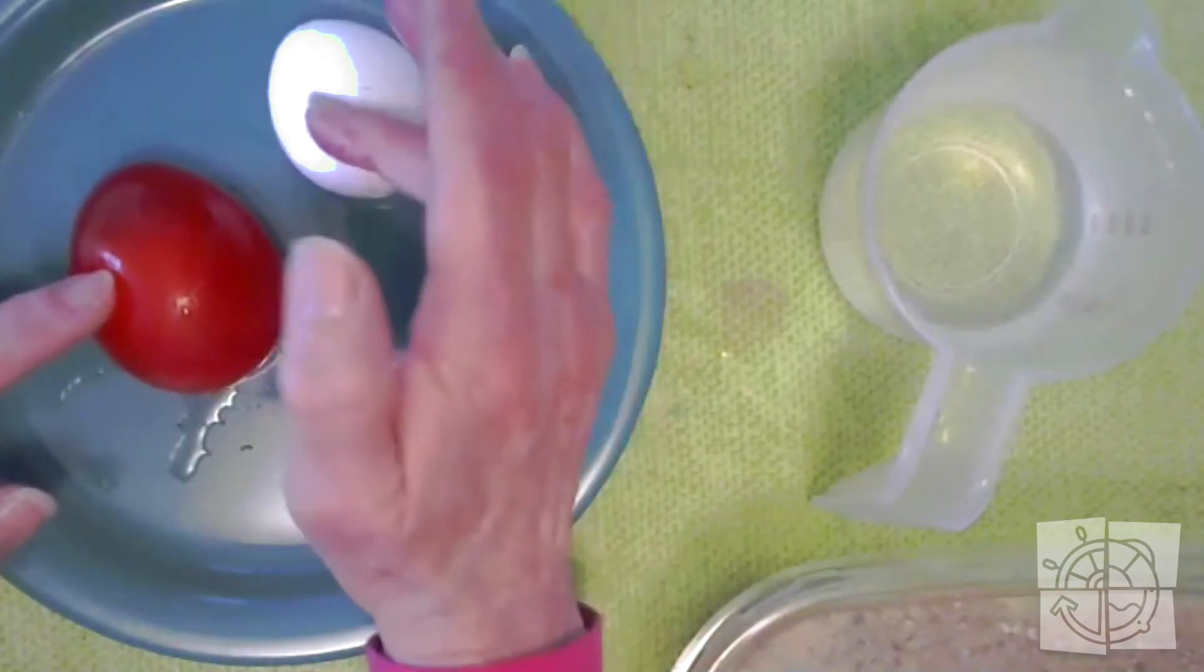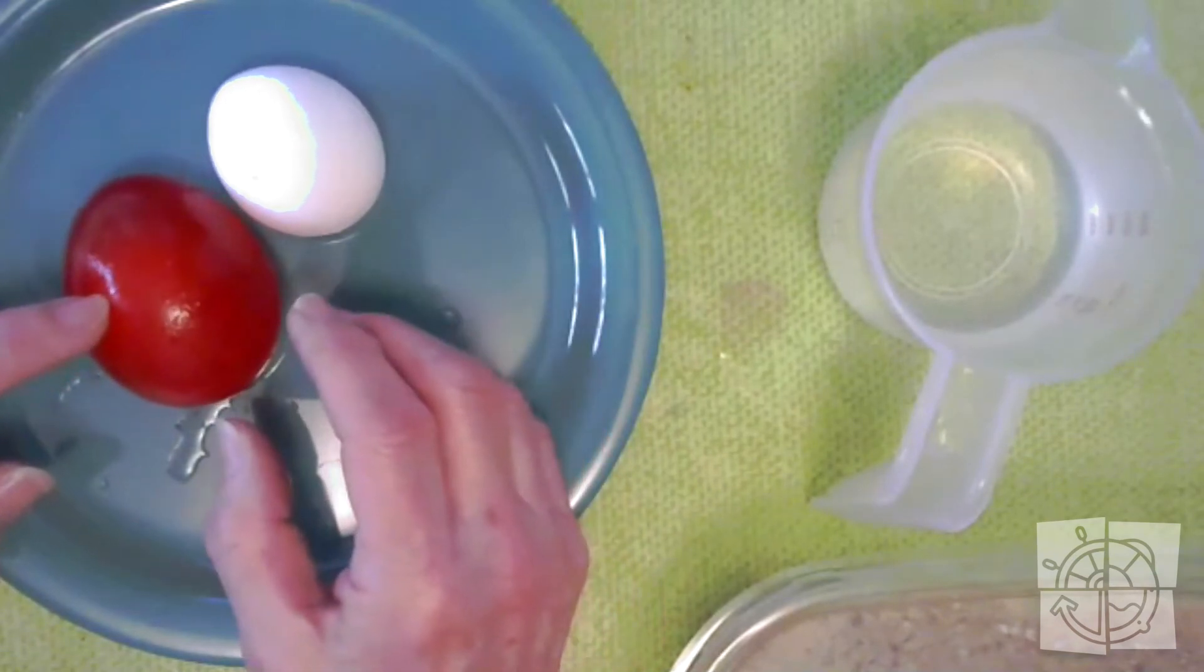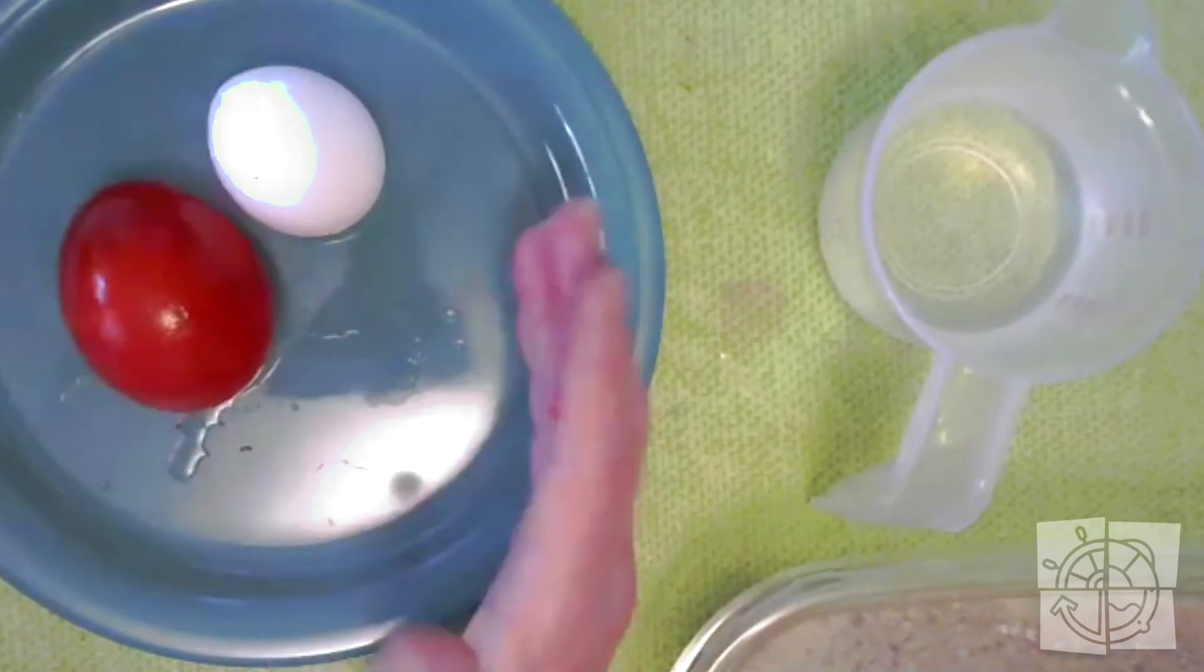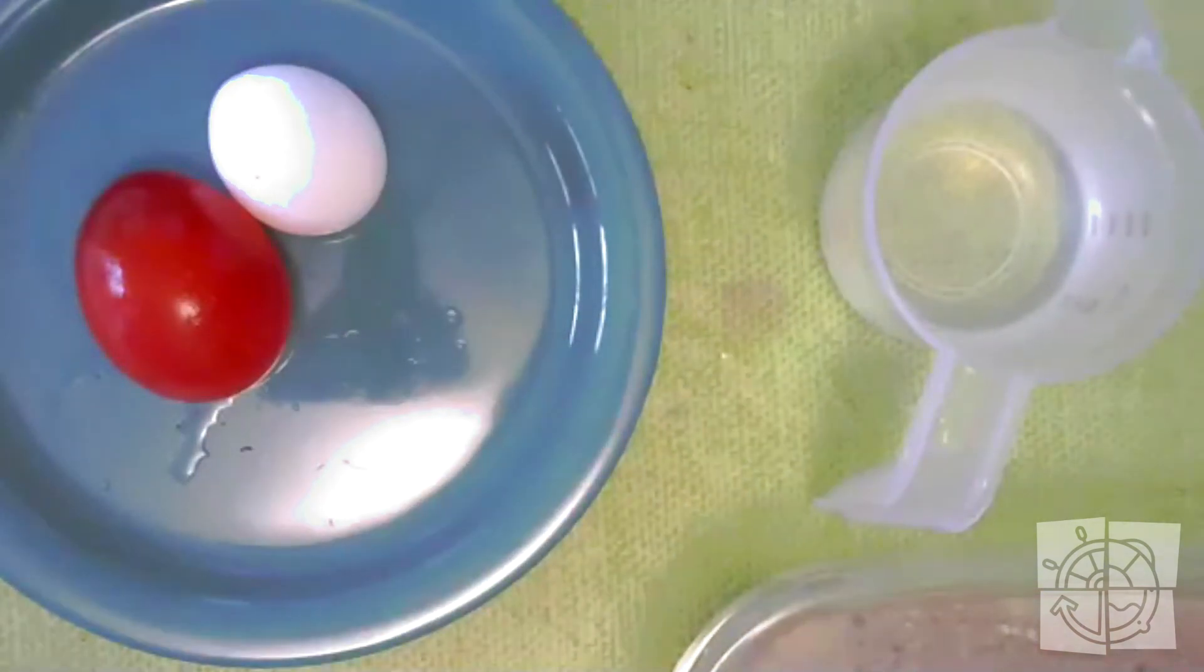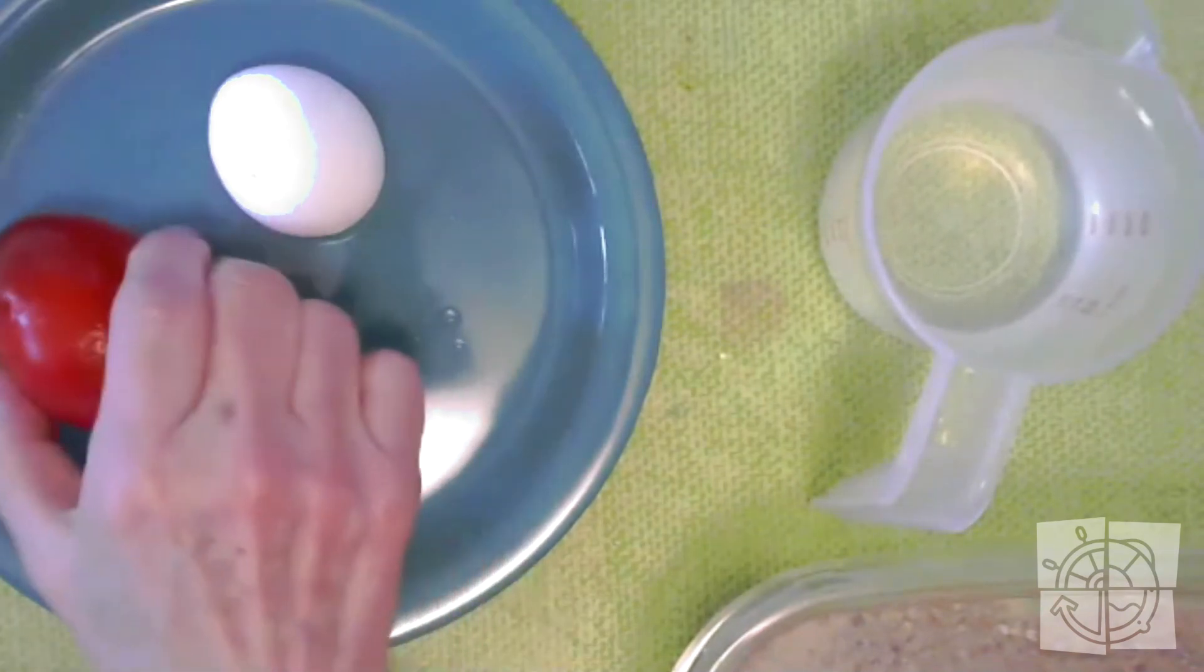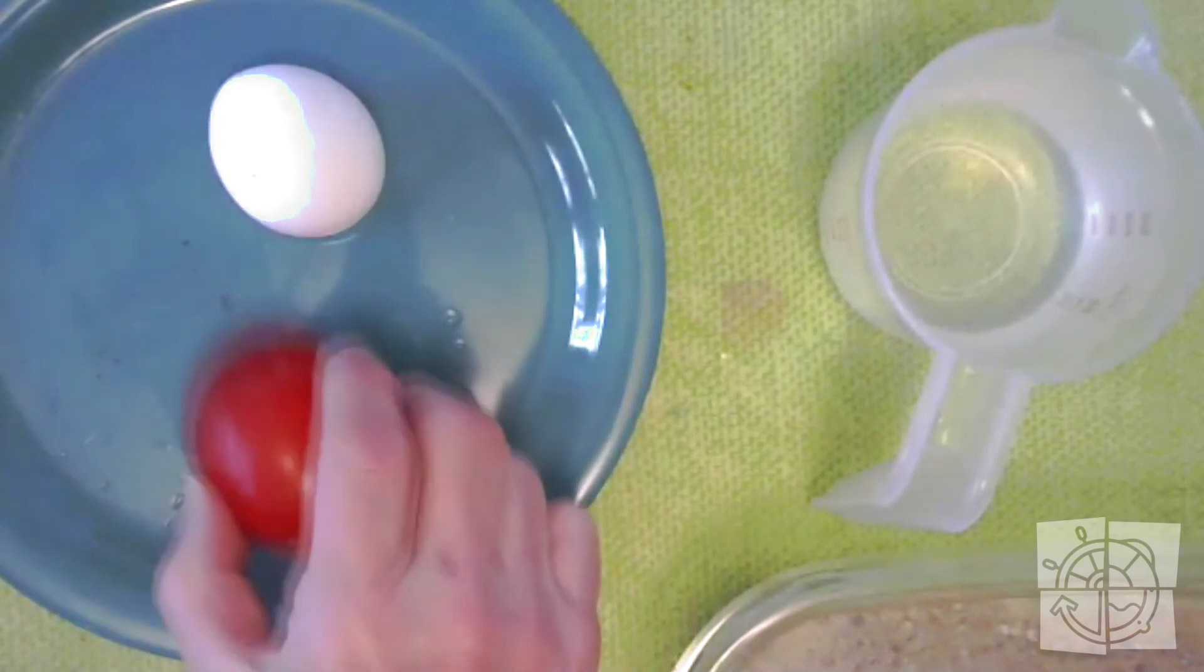And look, it got bigger because it soaked up all the vinegar. The whole egg got bigger. And I used a little bit of food coloring in there. And that's why it's red. But isn't that cool? I dissolved an eggshell with vinegar. The acid working on the calcium in the shell.